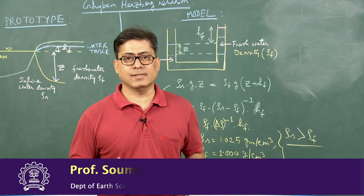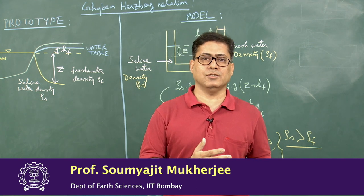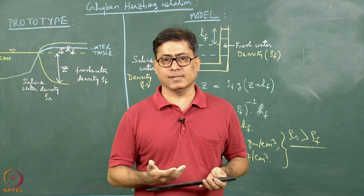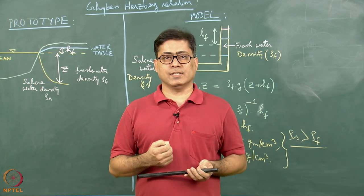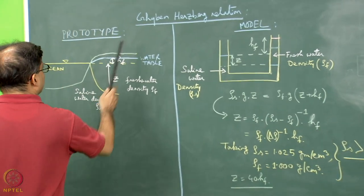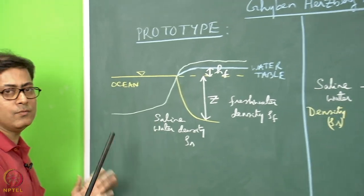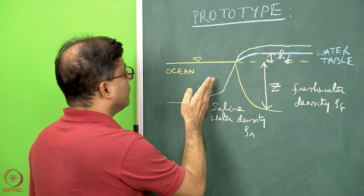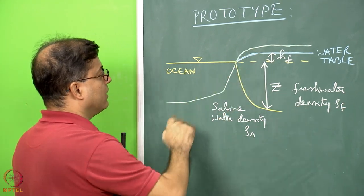Geoscience is an interdisciplinary subject. What we are learning in stress and strain in structural geology and tectonics will have application in other branches. Let us look at the geohydrological situation and how stress balance can work in that case. We take the case of the Ghyben-Herzberg relation, starting with the prototype or natural world scenario. Imagine this green line is the boundary between ocean and the land area — this is the coastal area.